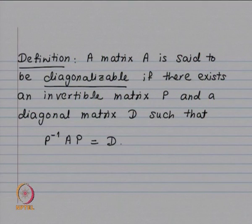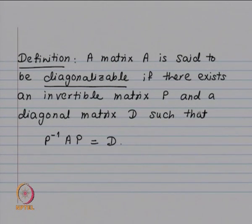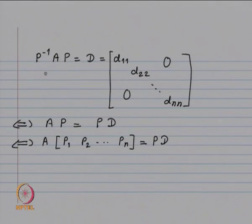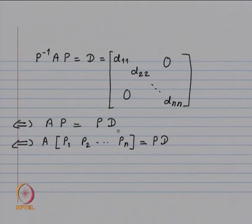A matrix A is diagonalizable if there exists an invertible matrix P and a diagonal matrix D such that P^{-1}AP = D, which means AP = PD. Writing the columns of P as p_1, p_2, ..., p_n, we have A[p_1, p_2, ..., p_n] = P times D.